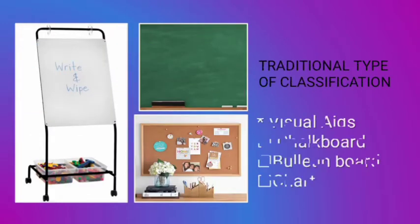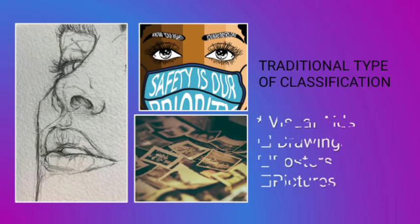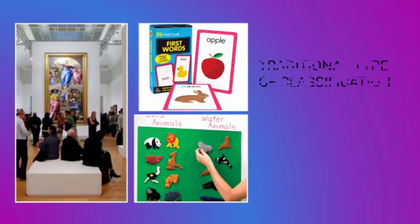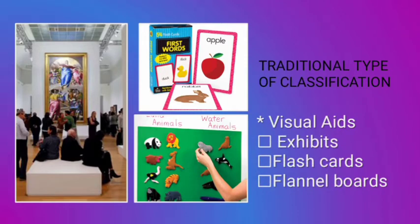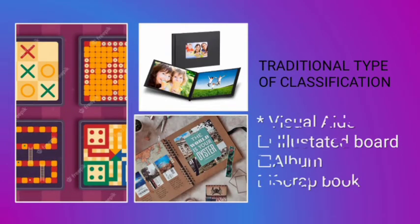Visual aids examples include: chalkboard, bulletin board, chart, drawings, posters, pictures, exhibits, flashcards, flannel board, illustrative board, album, and scrapbook.